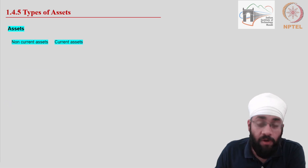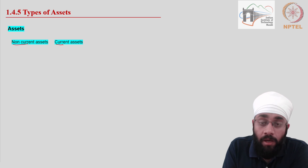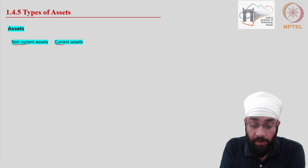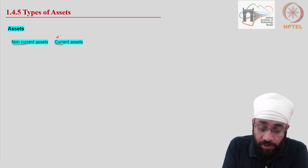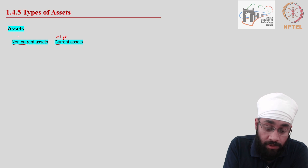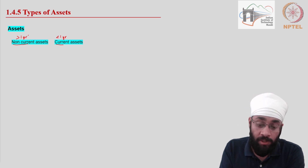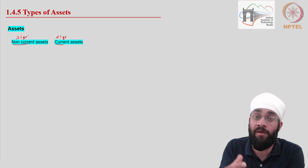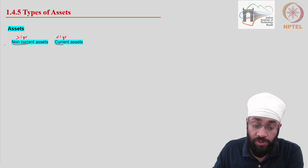Types of assets: there are two — non-current and current. The words 'current' and 'non-current' refer to short-term and long-term. Short-term means less than one year; long-term means more than one year. Throughout the course, whenever we say short-term, we are referring to less than one year, which is also referred to as the current year. Non-current is more than one year, which is long-term — try to remember that.